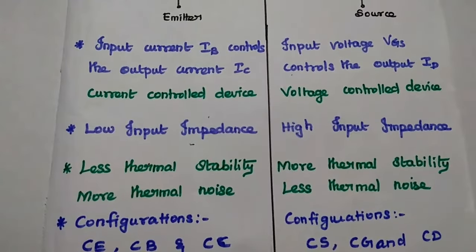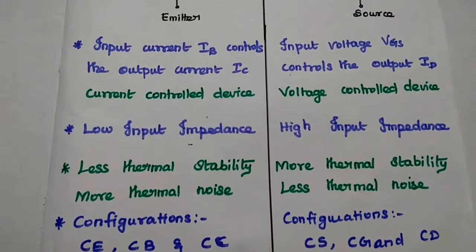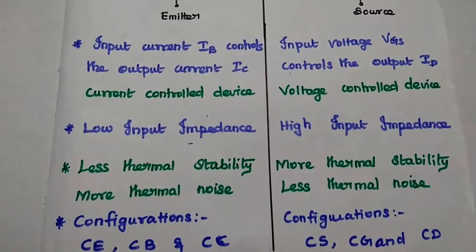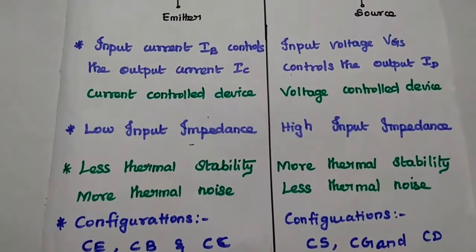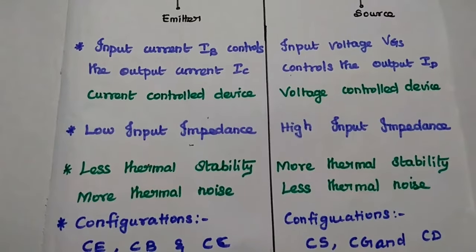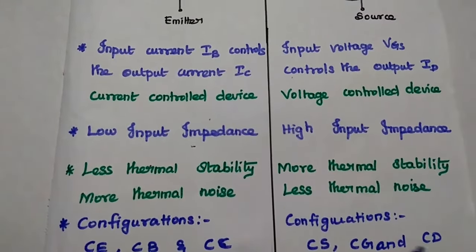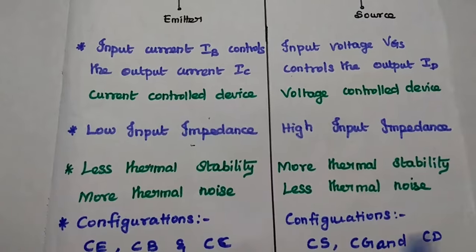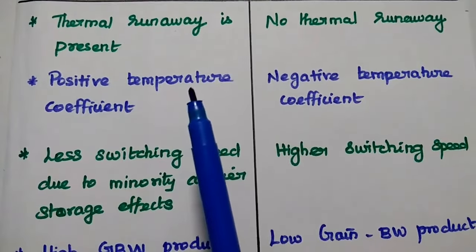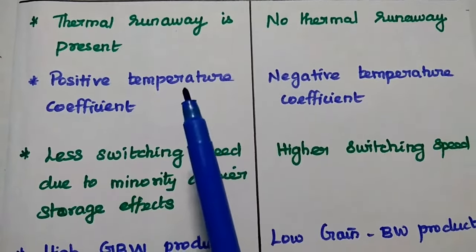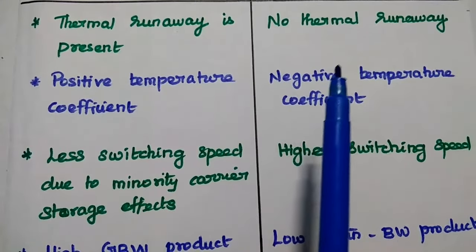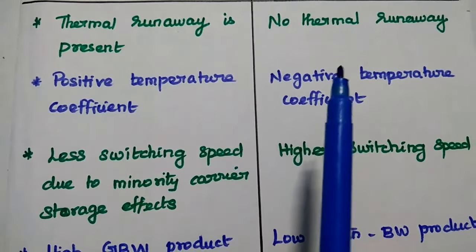There are three types of configurations in BJT: common emitter, common base, and common collector. Similarly, in FET we have common source, common gate, and common drain configurations. Thermal runaway exists in BJT, whereas there is no thermal runaway in FET.